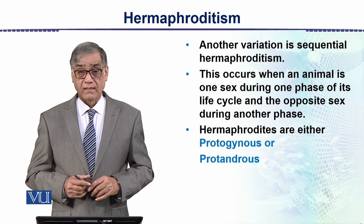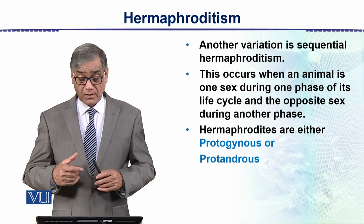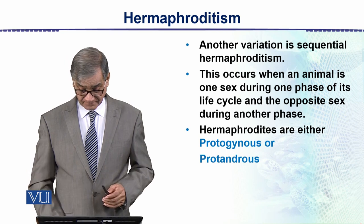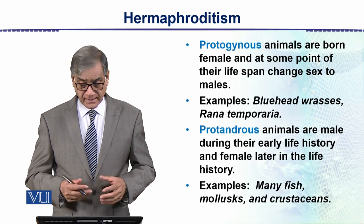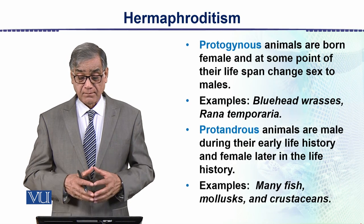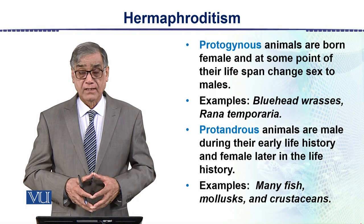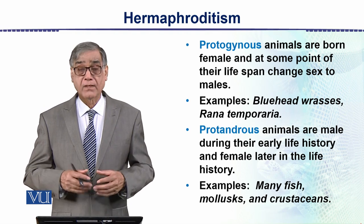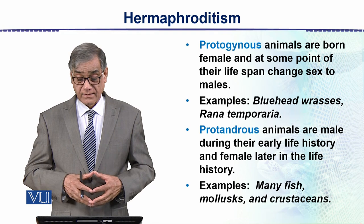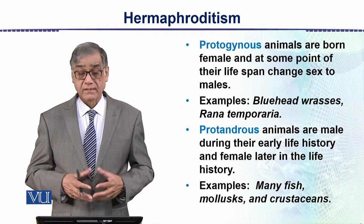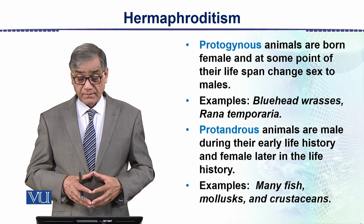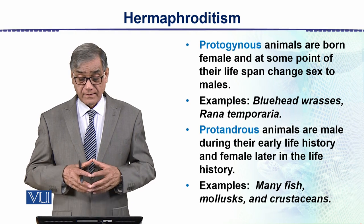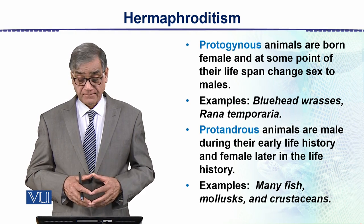Hermaphrodites are either protogynous or protandrous. Protogynous animals are born female, but they change their sex and become male later at the time of maturity. Examples include the blue-headed wrasse and Epinephelus (grouper).